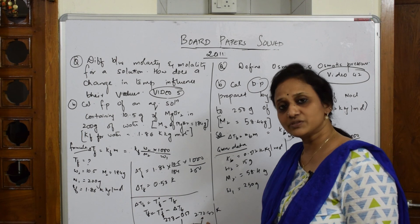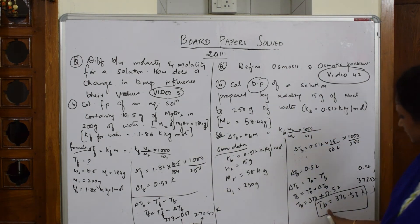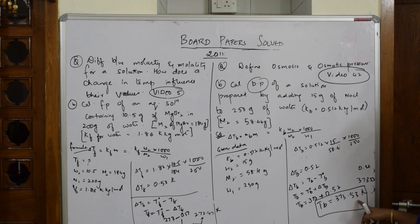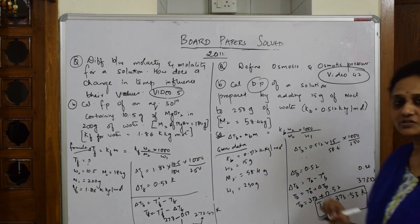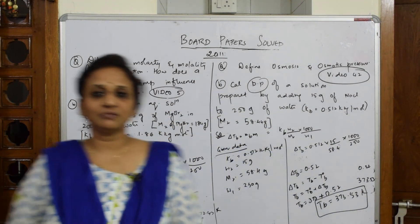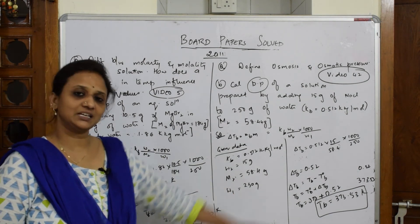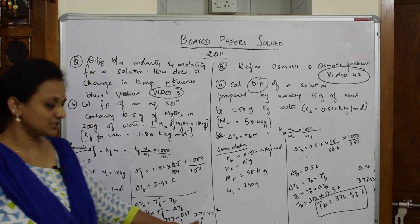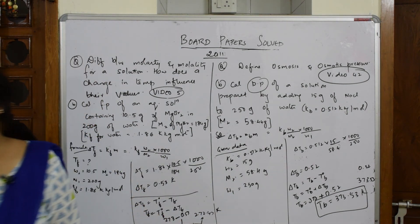TB finally equals 373.53 Kelvin. Observe carefully: depression in freezing point reduced from 273 to 272. Elevation in boiling point increased from 373 to 373.53. This is how you calculate. Whenever there's elevation, there's an increase. Whenever there's depression, there's a decrease.